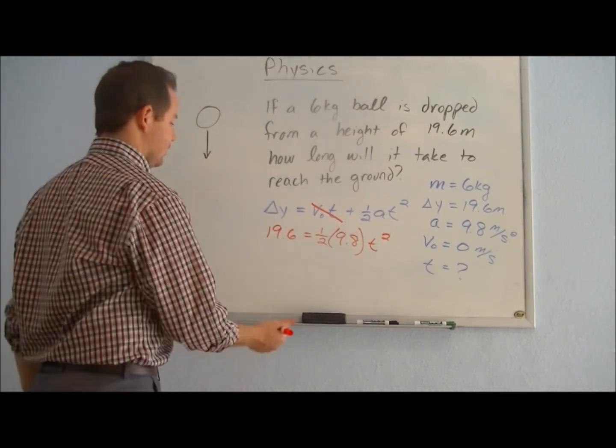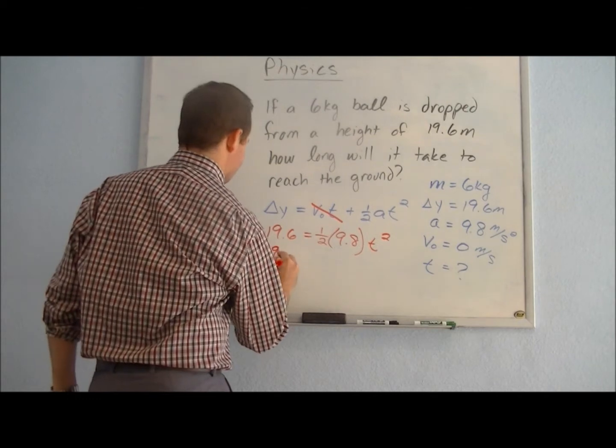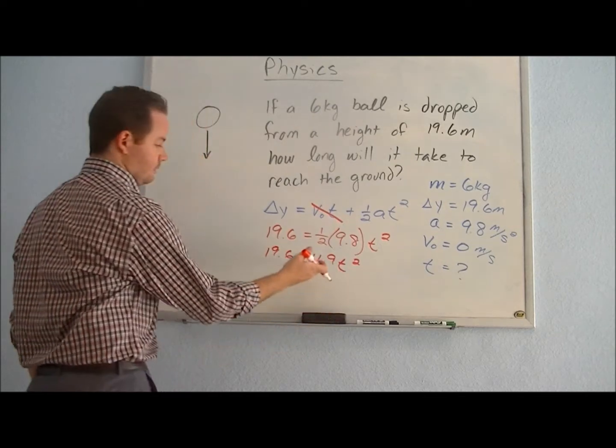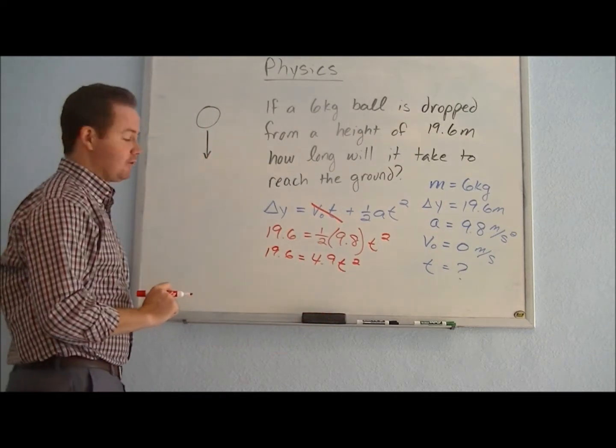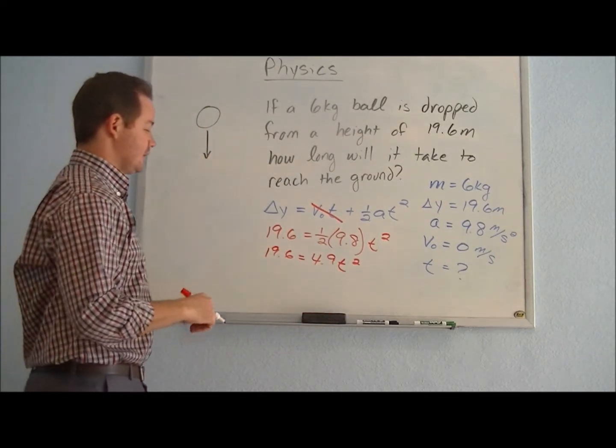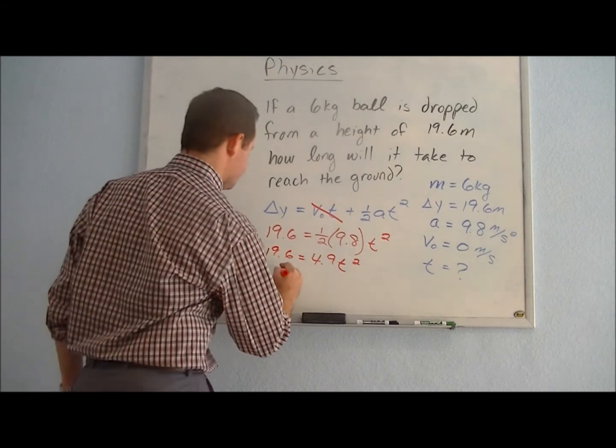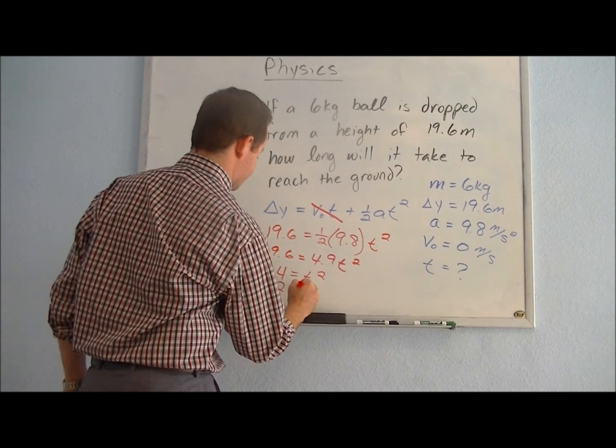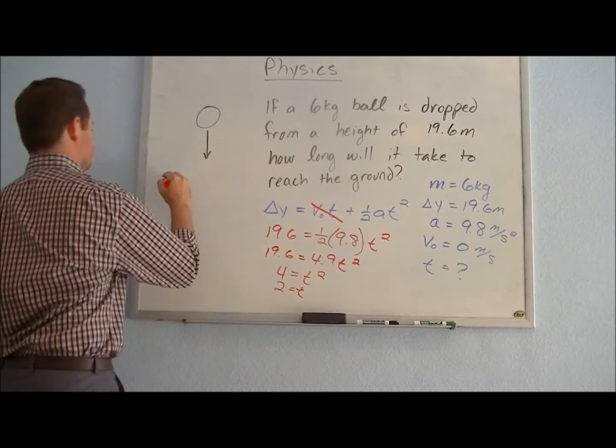In this case, to go ahead and simplify, one-half times 9.8 gives us 4.9, so we get 4.9 t squared. When we divide those sides by 4.9, 4.9 goes into 19.6 four times. So 4 is equal to t squared, and therefore our time will be equal to 2 seconds.